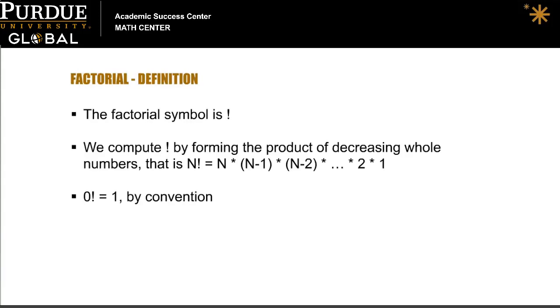What is a factorial? A factorial is a multiplication operation we can do on a number. The symbol we use is an exclamation point after the number.